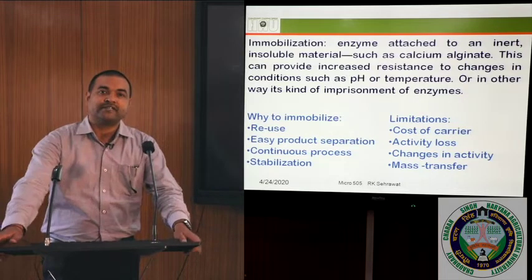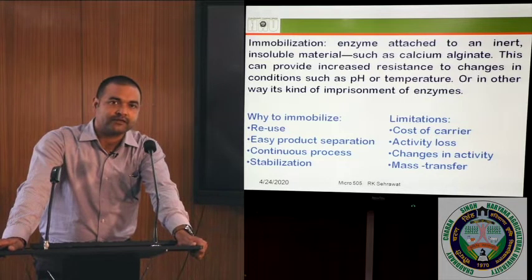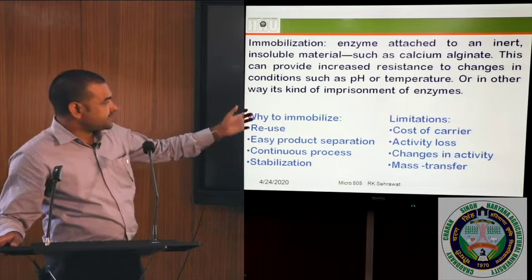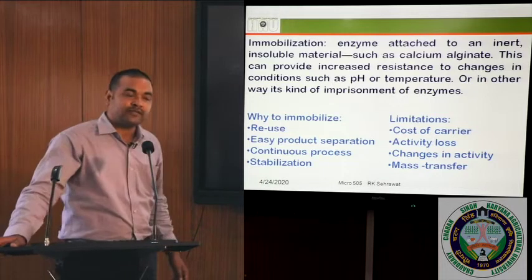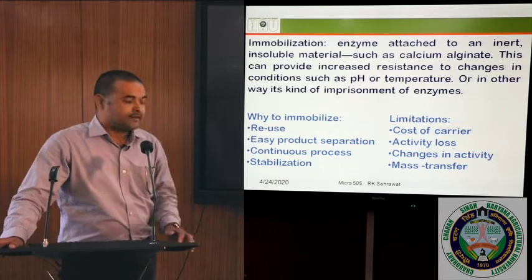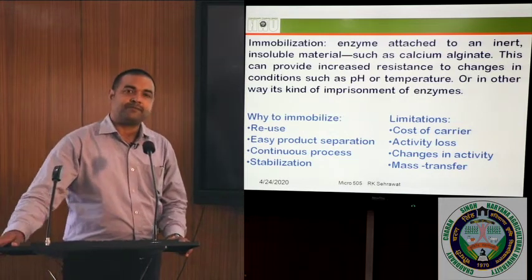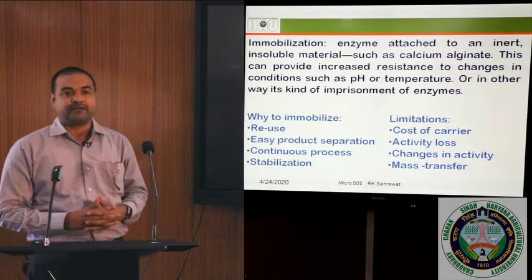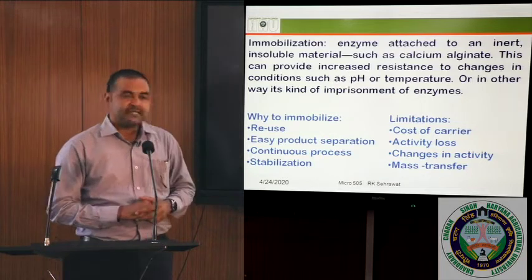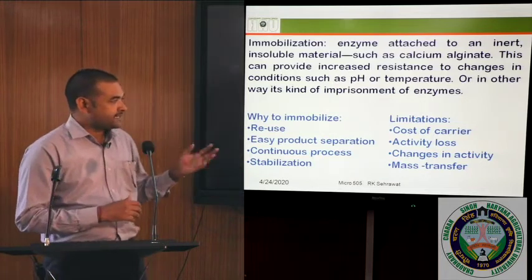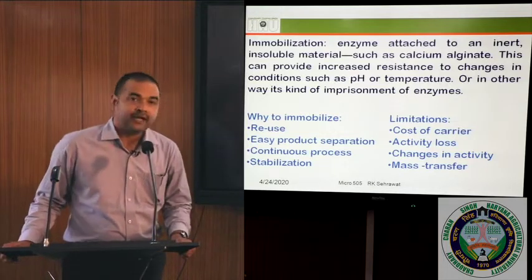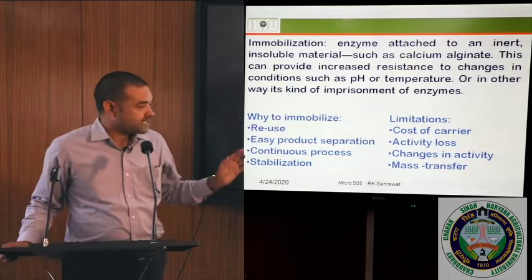There are two sides to each coin, so in the same way there are some limitations and constraints. The limitations are the cost of the carrier — the carrier material used for immobilization is usually costlier. Then there is activity loss; sometimes when we go for enzyme immobilization, the activity of the particular enzyme may go down. It also changes the activity because of active site availability, and the major constraint is in mass transfer.